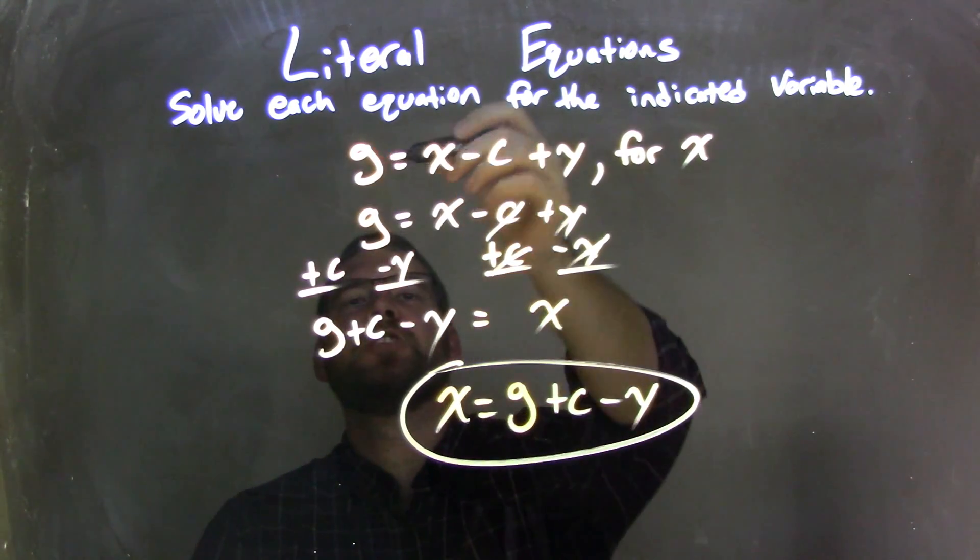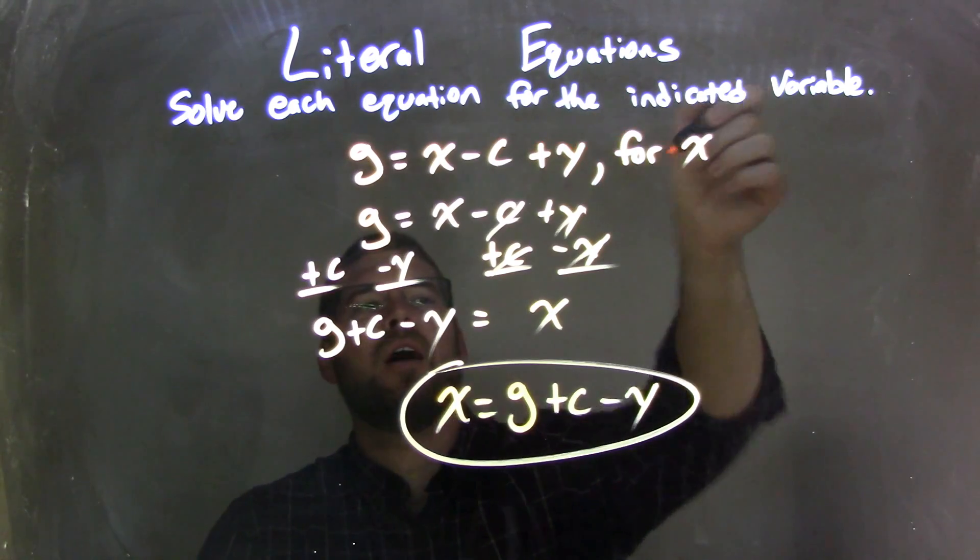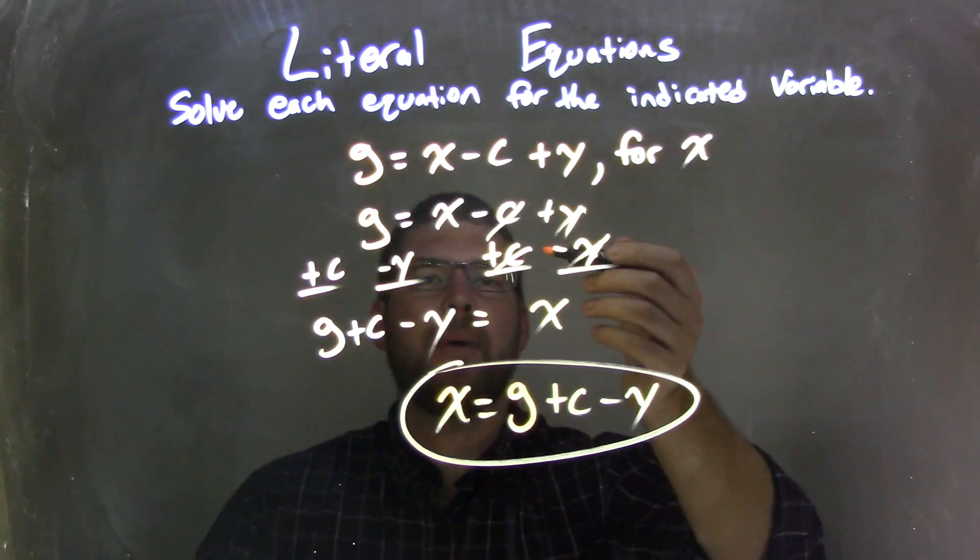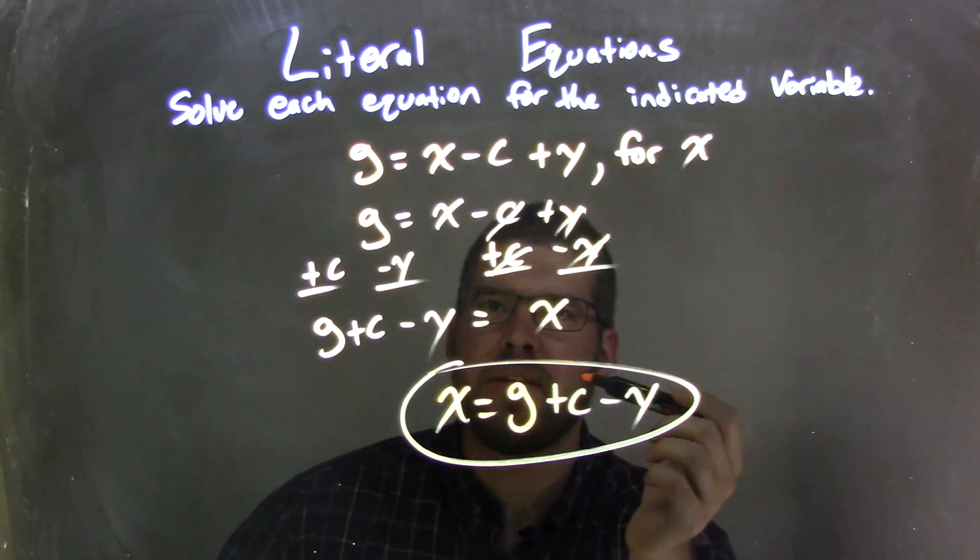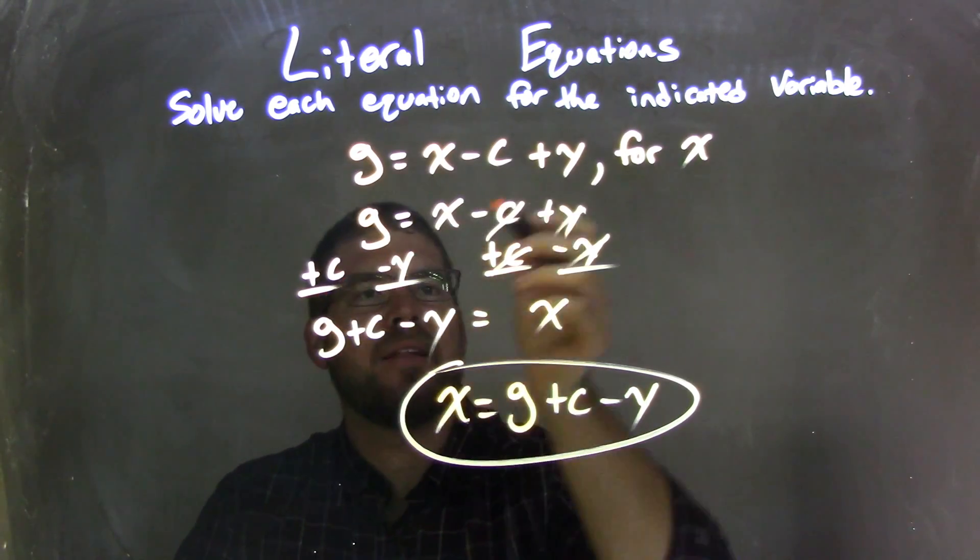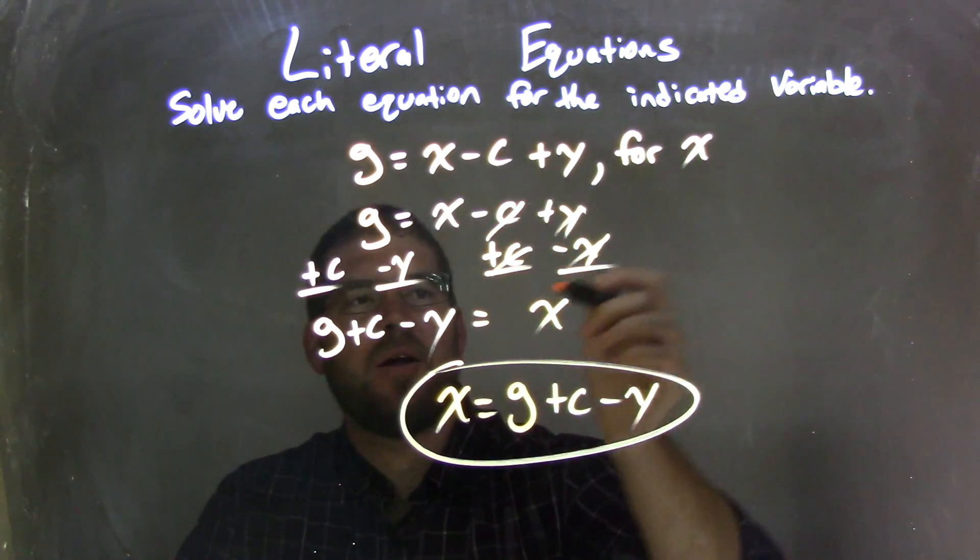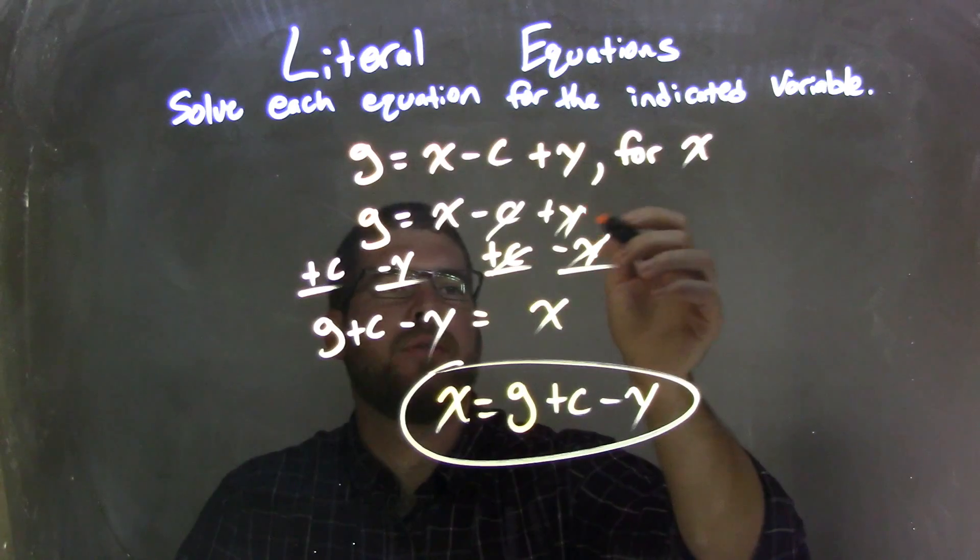So let's recap. We're given g equals x minus c plus y, and we're solving for x. So I rewrite my equation, and I decided to do all this in one step. I added c to both sides and eliminated the minus c on the right. I subtracted y to both sides and eliminated the plus y on the right.